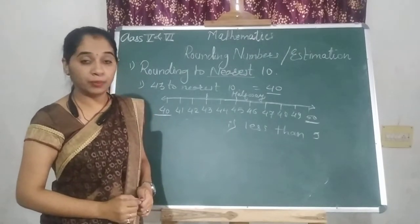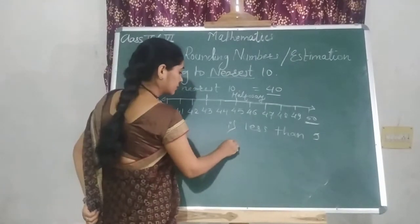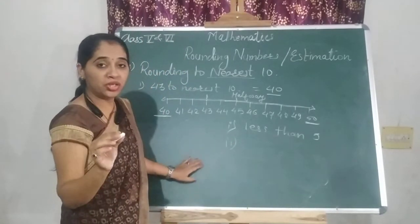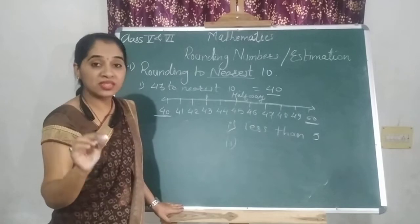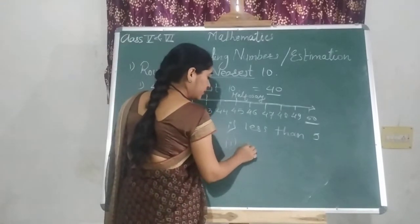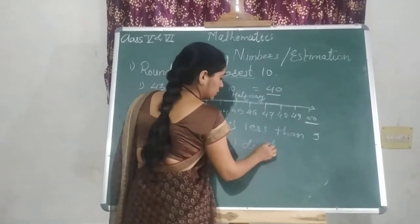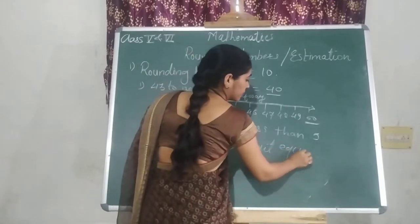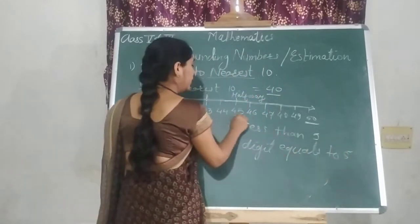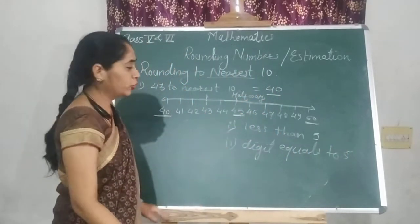Second rule for rounding numbers. If the digit you are going to observe is 5, if the number or digit equals to 5, equals to 5 means midway, halfway, then what you have to do is...